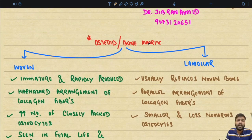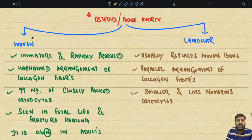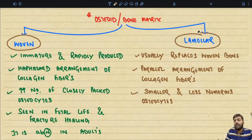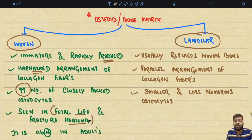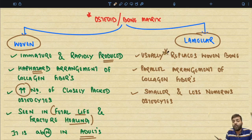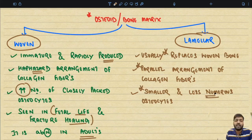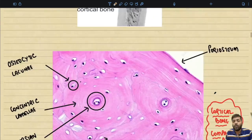Bones can be of two types: woven bone or lamellar bone. Woven bone is immature and rapidly produced, showing a haphazard arrangement of collagen fibers with an increased number of closely packed osteocytes. It is mainly seen in fetal life and during fracture healing — it is abnormal to find woven bone in normal adults. Lamellar bone replaces woven bone and has a more organized, parallel arrangement of collagen fibers, with fewer and smaller osteocytes.